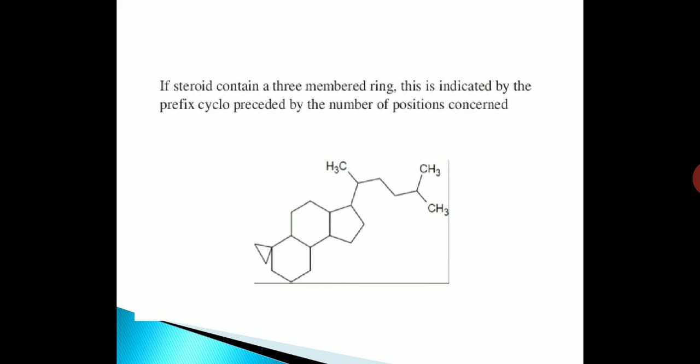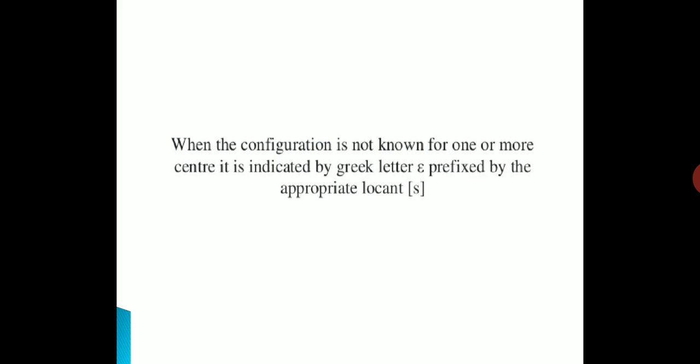If a steroid contains a three-membered ring, this is indicated by the prefix 'cyclo', preceded by the number of the position concerned. Here I have shown a three-membered ring. When the configuration is not known for one or more centers, it is indicated by the Greek letter omega, prefixed by the appropriate locant in brackets.